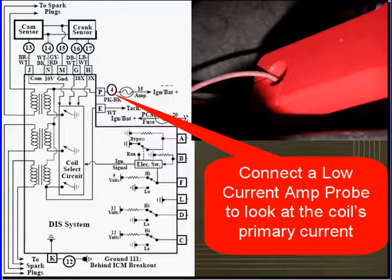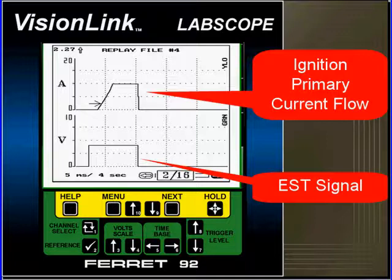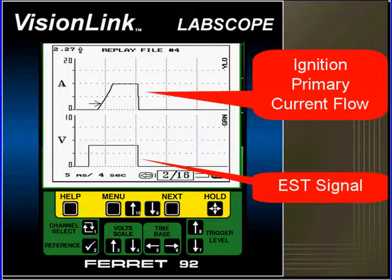First, connect the low current amp probe to look at the coil's primary circuit. You can see that we connected right to B+. You can see our two patterns that we pulled up here are the ignition primary current flow and the EST signal, electronic spark timing signal.